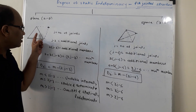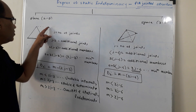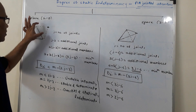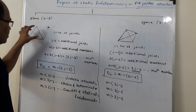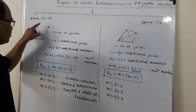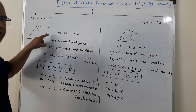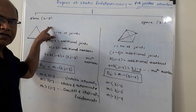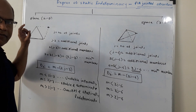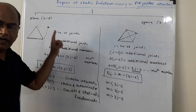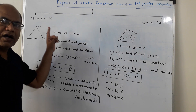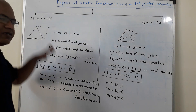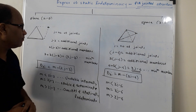If I want to extend the truss — if I want to add one more joint — I will have to connect to the basic element of truss by means of two members. So, for every additional joint, two additional members are required, which are to be added to the basic truss element.